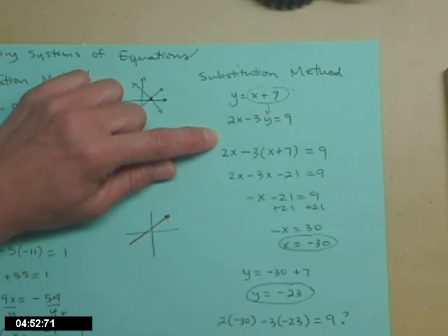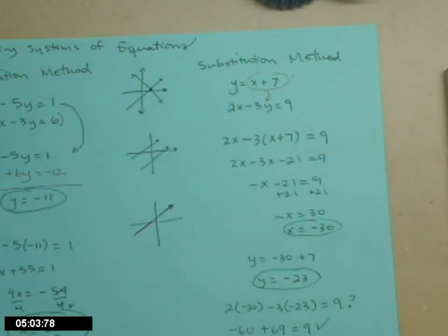2 times negative 30, so there's negative 60. Negative times negative is going to be a positive here. 3 times 23, let's see, 69, is that equal to 9? Sure it is. Good job.